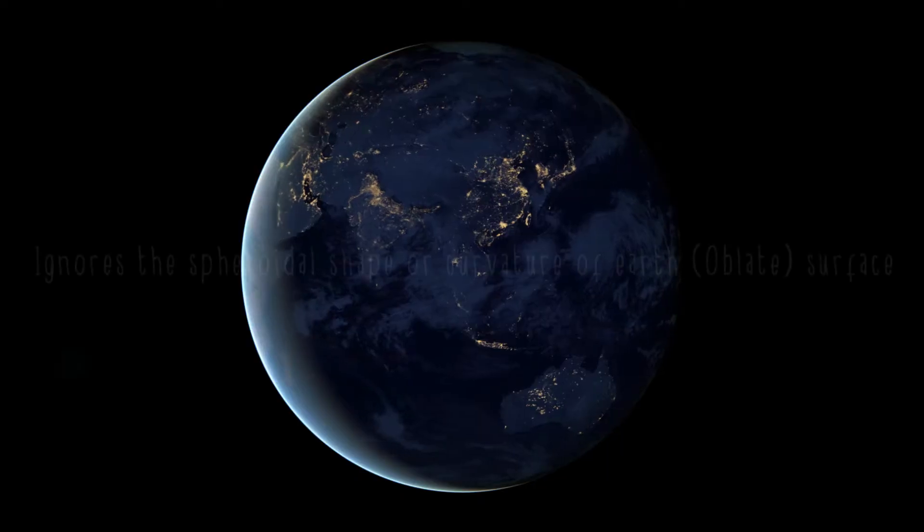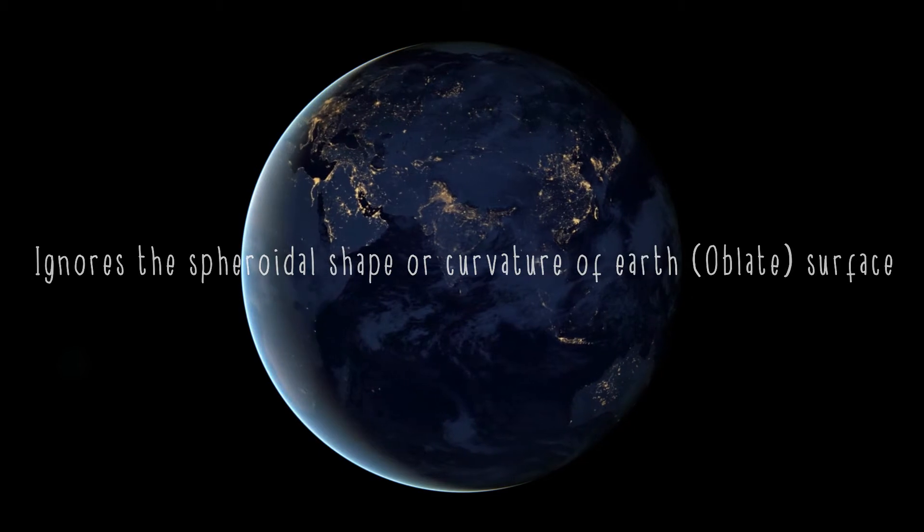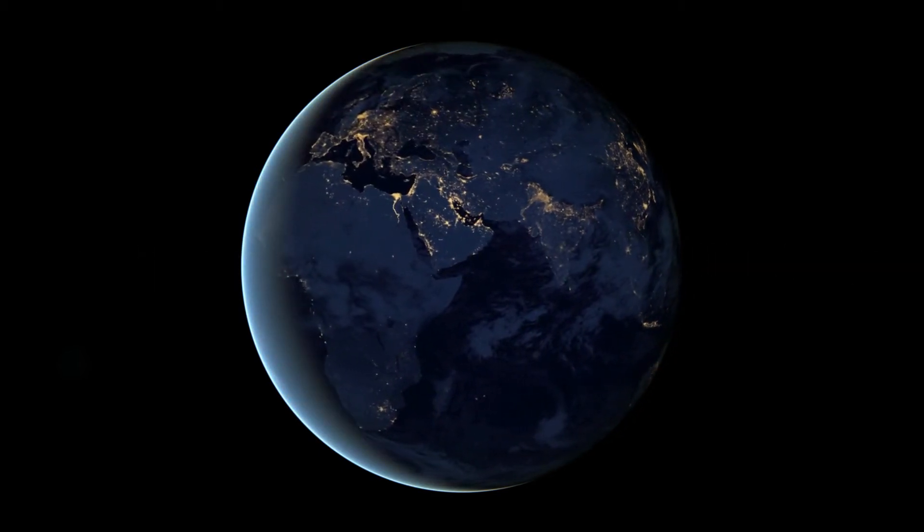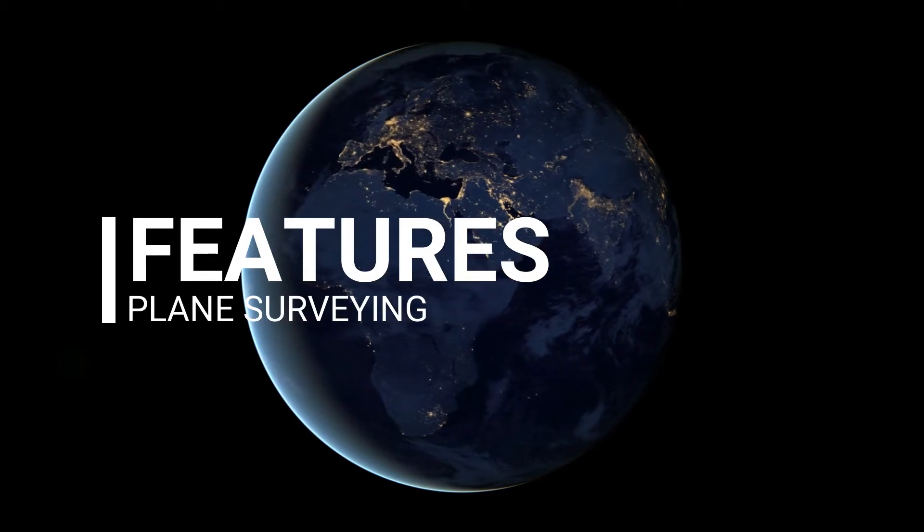In other words, we ignore the spheroidal shape called as the oblate surface of the Earth. We will now look into the features of plane surveying.